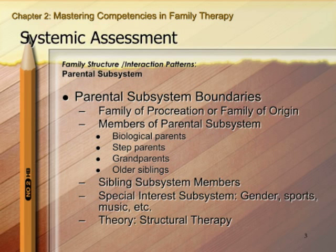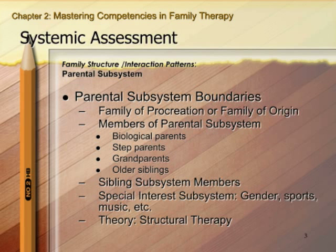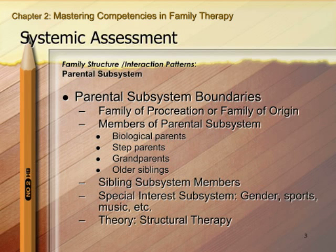In most cases, the same two people are part of both systems — the couple who are often also the parents. At some point in the family life cycle, the couple and the parental subsystems are the same people, and yet these two subsystems function differently. Within the couple subsystem there's one set of logic, boundaries, and interaction patterns, and within the parental subsystem it can be different.